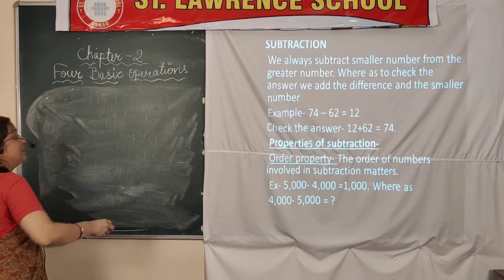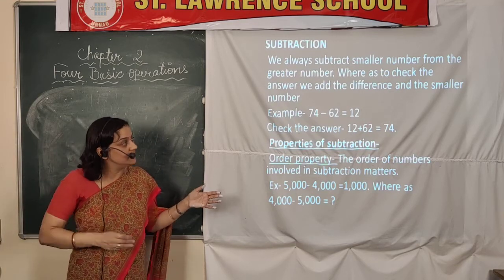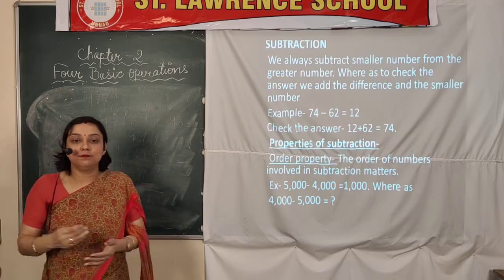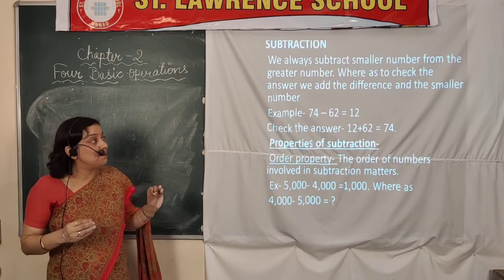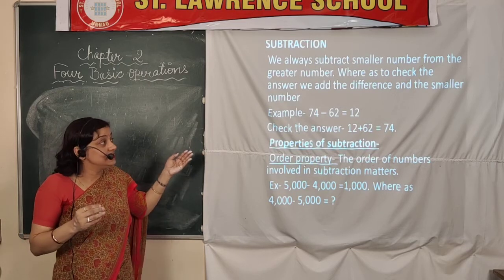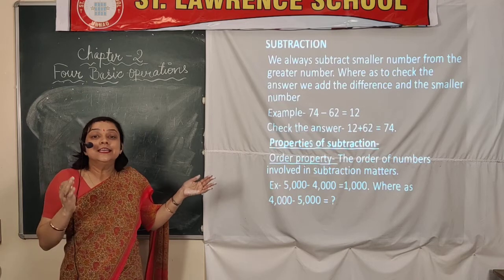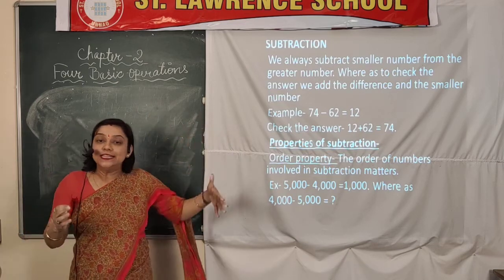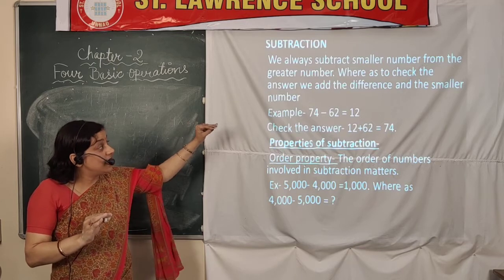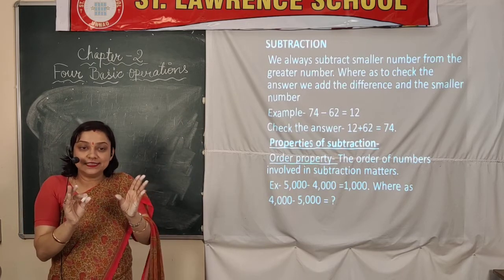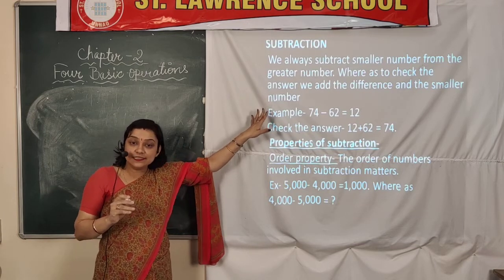After addition, let us start with subtraction. We always subtract a smaller number from the greater number. To check the answer, we add the difference and the smaller number. The rule to remember before starting subtraction is: always subtract the smaller number from the greater number — the greater number cannot be subtracted from the smaller number. The difference is the answer we get after subtracting two numbers, and we add that difference to the smaller number to verify.